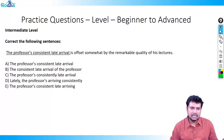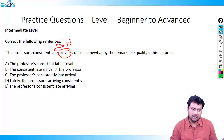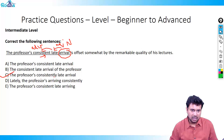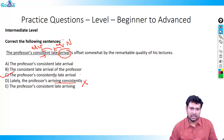Next question: 'The professor's consistent late arrival.' 'Arrival' is a noun. How is he arriving? Late — so 'late' is an adjective. How late? Consistently — so that word must be an adverb. But 'consistent' is an adjective, so it must be turned into 'consistently.' The only option with that is option C: 'The professor's consistently late arrival is offset somewhat by the remarkable quality of his lectures.' In option D, 'consistently' modifies 'arriving' rather than 'arrival,' making it incorrect. The right answer is option C.